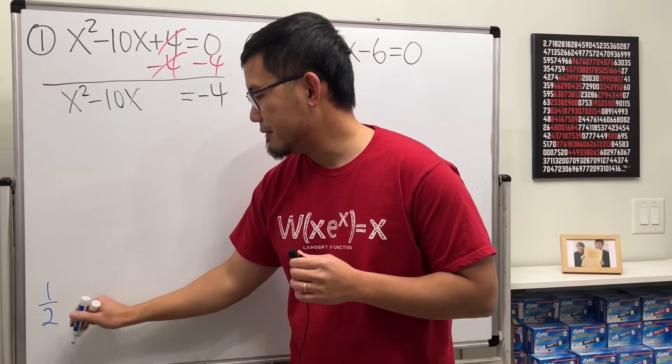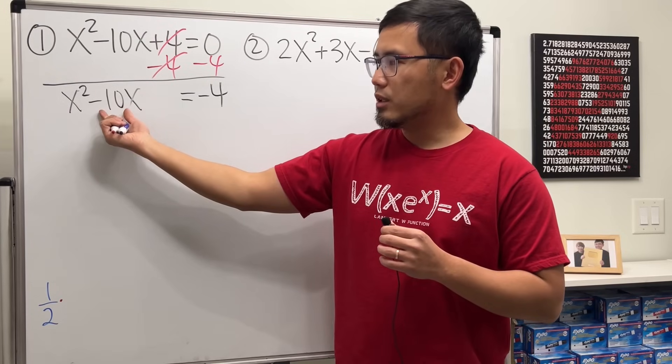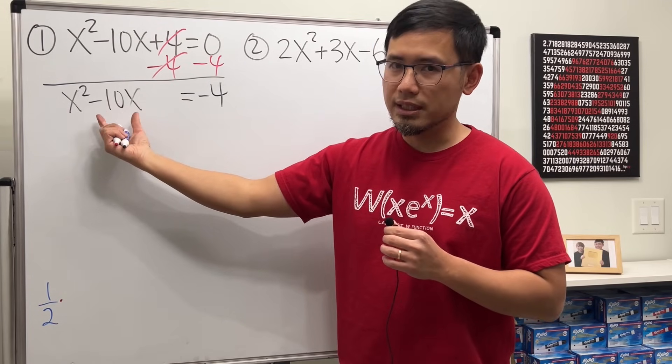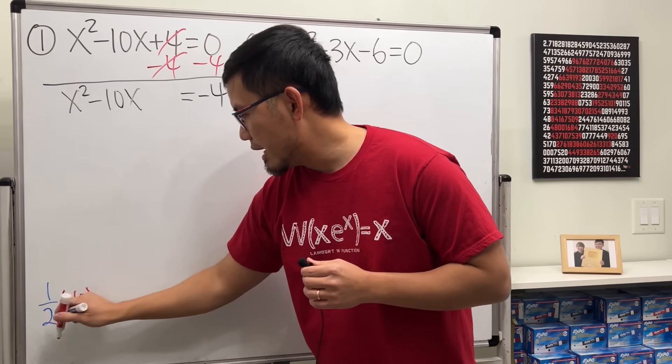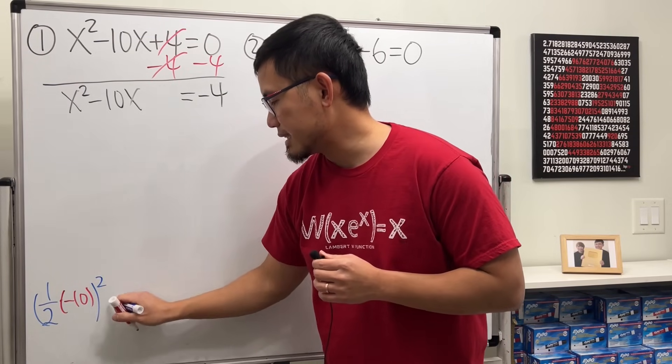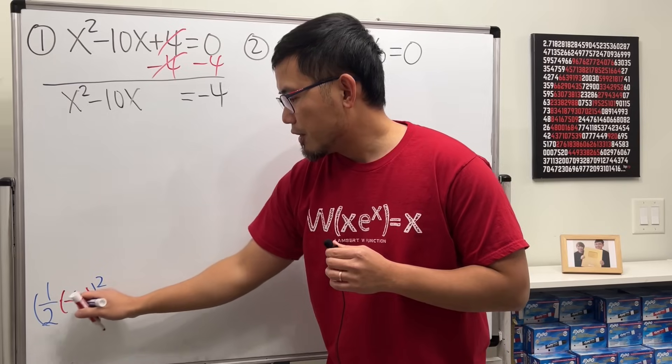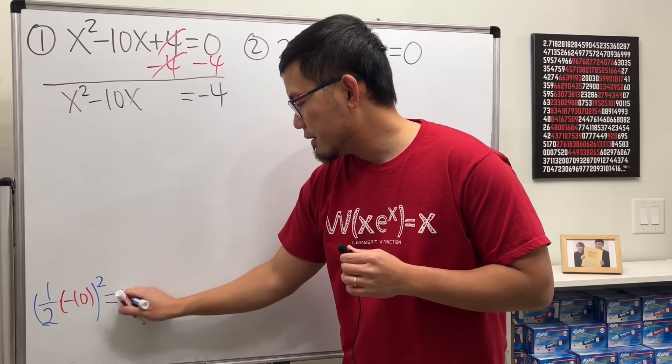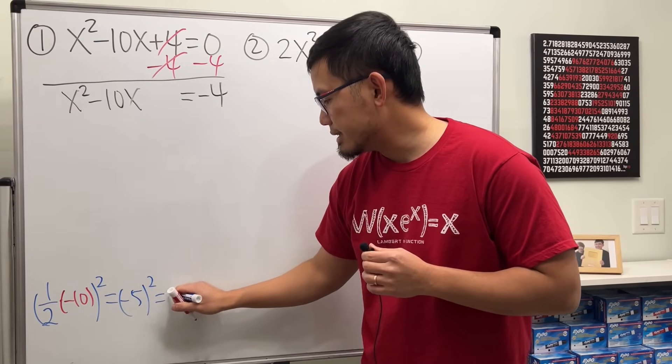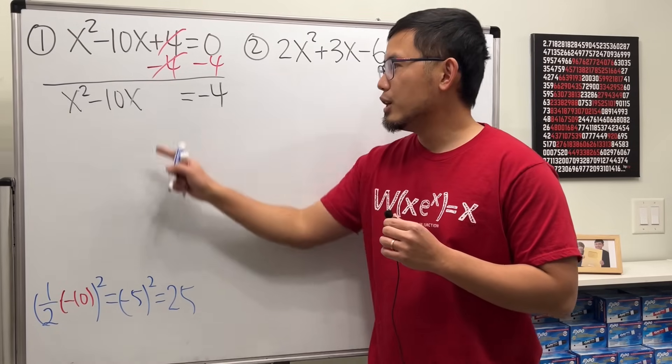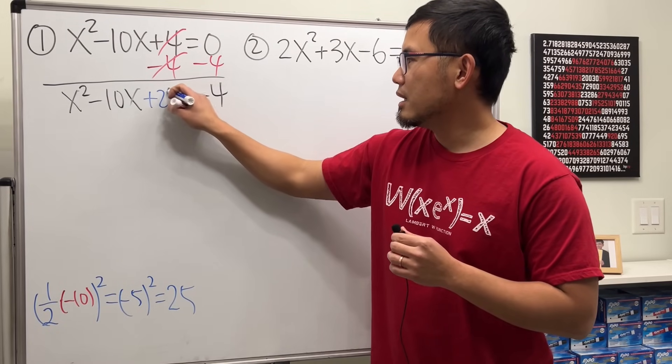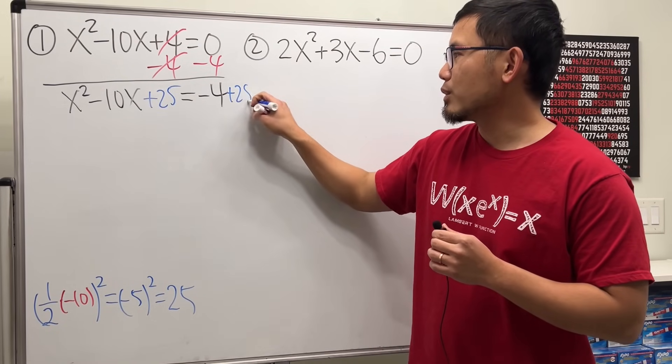We take 1 half times the coefficient of x, which is negative 10. So we multiply that by negative 10. And then we will have to square that. Half of negative 10 is negative 5, and then square that, we get 25. So this time, we will have to add 25 here, and do the same right here. Add the 25 here.